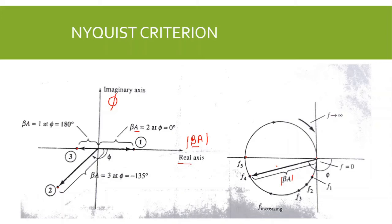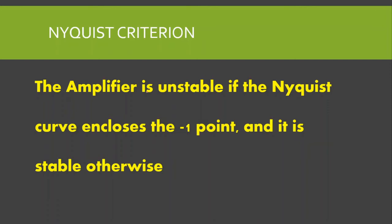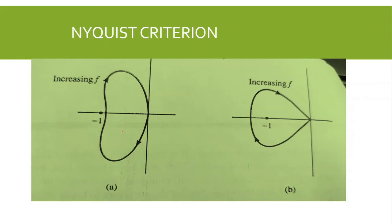How do we assess stability using the Nyquist plot? The amplifier is unstable if the Nyquist curve encloses the minus-one point, and it is stable otherwise. In the figure, we have two types of Nyquist plots plotted for increasing frequency. The first plot does not encircle the minus-one point, so that amplifier is stable. In the second case, the Nyquist curve encloses the minus-one point, so that amplifier is unstable.